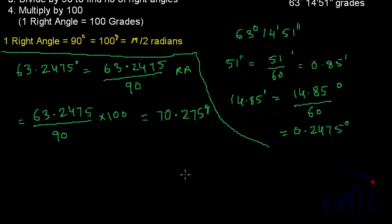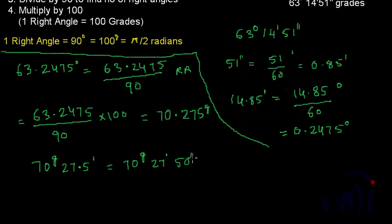Grades follow the decimal system perfectly, so 70.275 grades equals 70 grades and 27.5 minutes, or 70 grades, 27 minutes and 50 seconds. In each grade there are 100 minutes, and in each minute there are 100 seconds. So from the decimal result, the digits before the decimal are grades, the next two digits are minutes, and the following two digits are seconds. Next we'll learn how to convert grades into degrees — keep watching, bye bye.